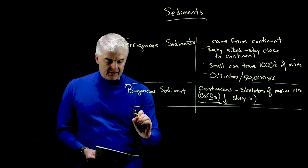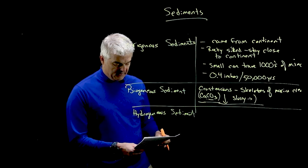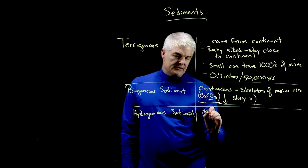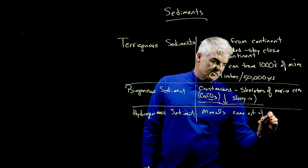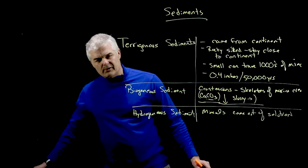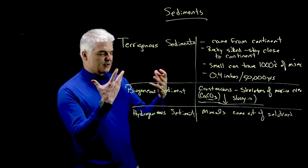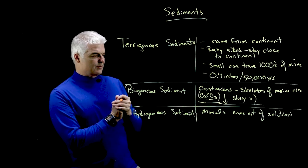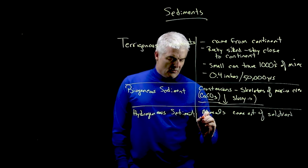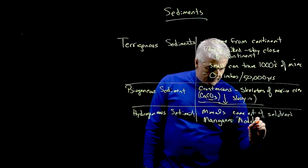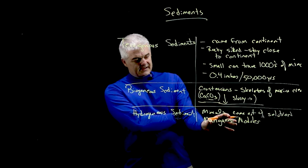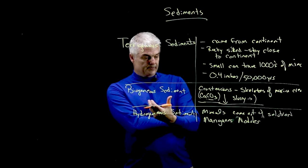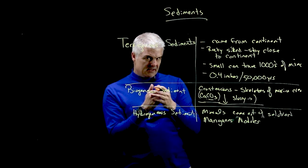The last kind is called hydrogenous sediments. These are the cool ones — minerals that come out of solution. You've probably seen this if you've been in a cave with stalactites and stalagmites. Under certain conditions underwater, certain minerals can come out of solution. The ones that have gotten the most interest lately are called the manganese nodules — they contain manganese, cobalt, and other minerals found on the bottom of the ocean. Let's take a look at a video.